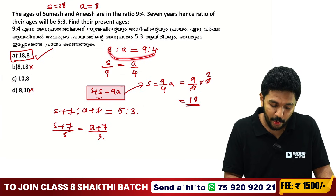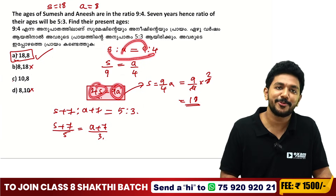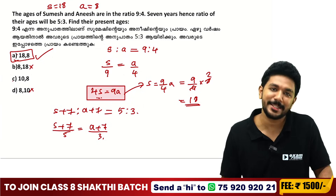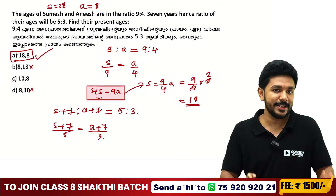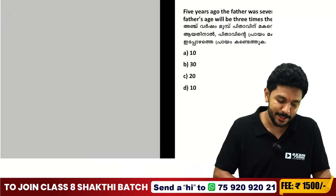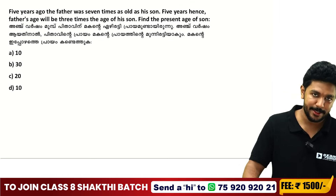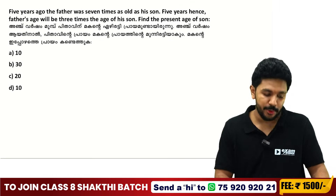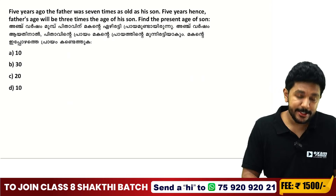S into 4 is equal to A into 9. Now the next question: 5 years ago, a father was 7 times as old as his son.